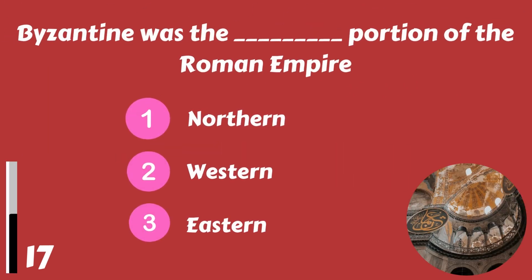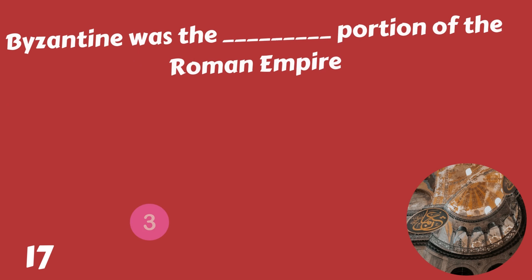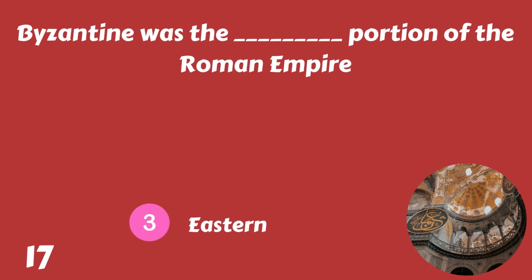Byzantine was the blank portion of the Roman Empire. Northern, Western, or Eastern? Byzantine was the eastern portion of the Roman Empire.